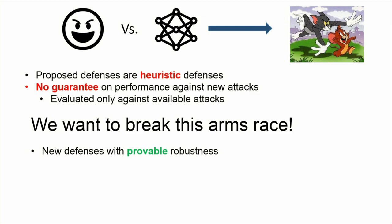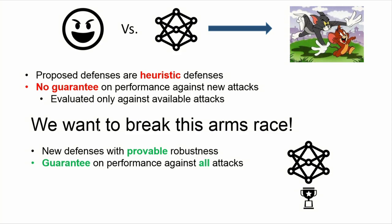Our main motivation is to try to break this arms race between attacks and defenses. What one would need to do is come up with defenses that have provable robustness. Once you have a proof, you have no holes in your system that the adversary can exploit. We want to guarantee performance against all possible attacks, even future ones — and hopefully give the trophy to machine learning.